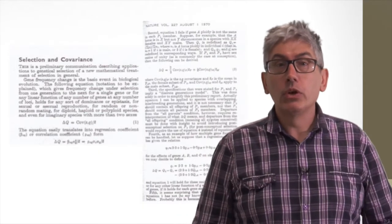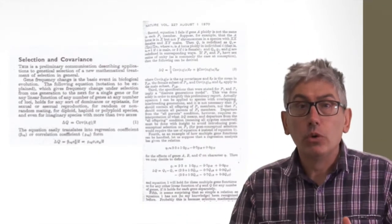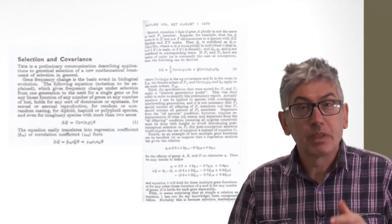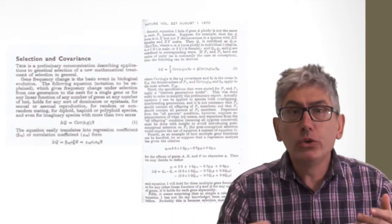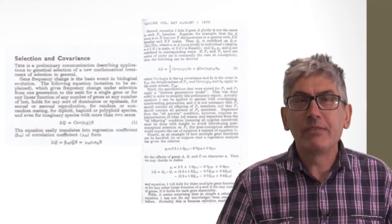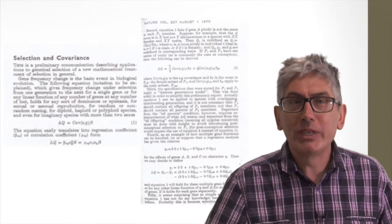I guess prison didn't work as either deterrent or engine of reform for these two. Now this was what the equations looked like. Some of you may be able to understand what's going on here. I can't. But I'm reliably informed that they do the trick of modelling genetic variation with an altruistic twist.